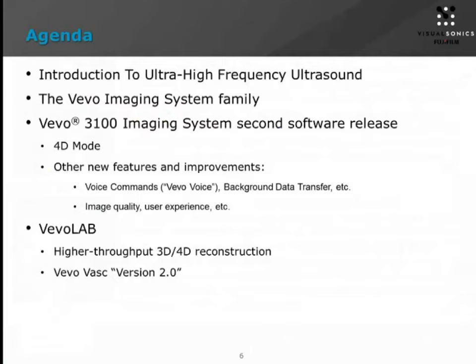Welcome everybody, thank you so much for joining us. A lot of material to cover here, so just to get everybody up to speed I'll give a quick overview on ultra-high frequency ultrasound and the Vivo imaging system platform family, and then we'll jump right into the 3100 system software. The Vivo 3100 system has been out for around a year and a half now and this is our second major release of software. This release includes lots of great features, but the major thing we're really excited to debut is the 4D imaging mode. Along with the 3100 we've also got our Vivo Lab workstation analysis platform with forthcoming improvements including 3D reconstruction and improvements to our Vivo VASC analysis platform.